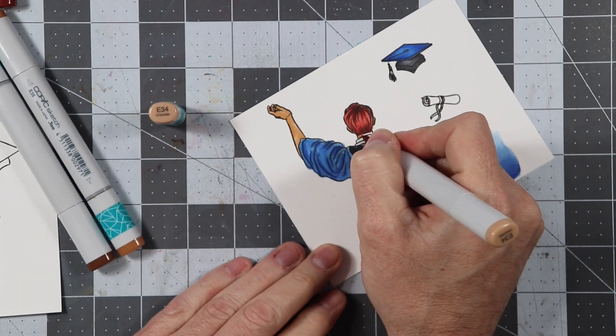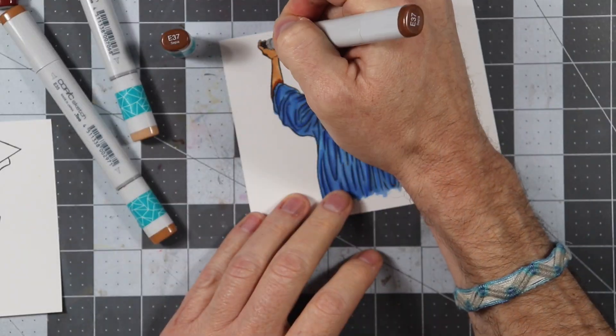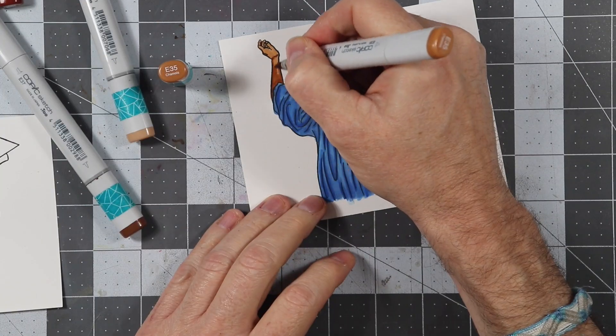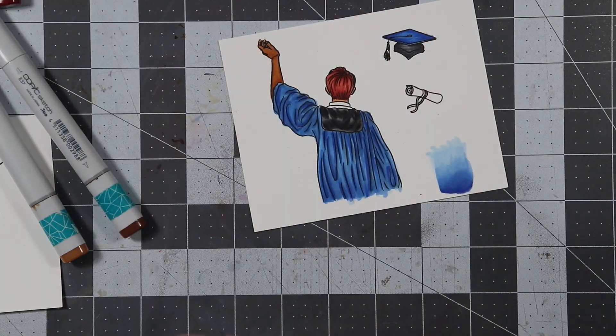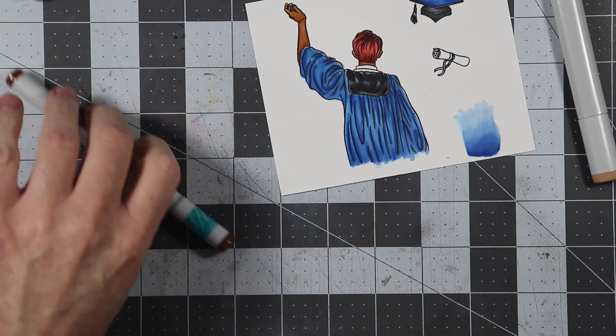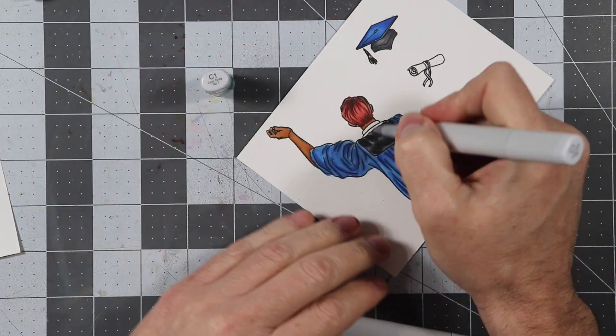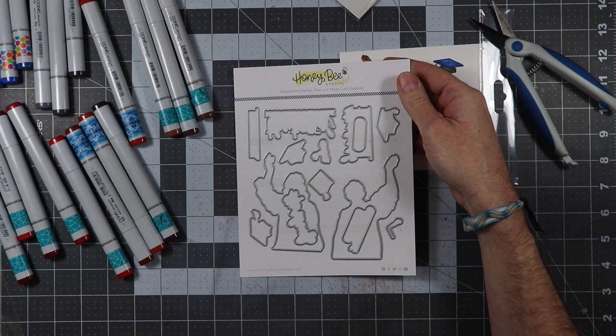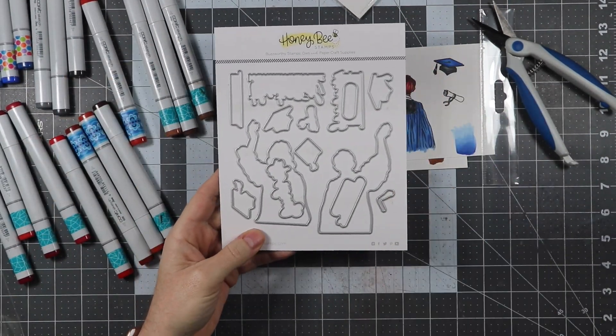Now we're going to go ahead and color in the skin. I used some E34, E37, and E35 on this and did some blending to get that arm and the back of the neck colored. And then I'm just using some bluish gray for the collar there.